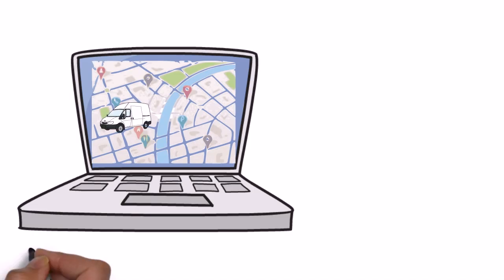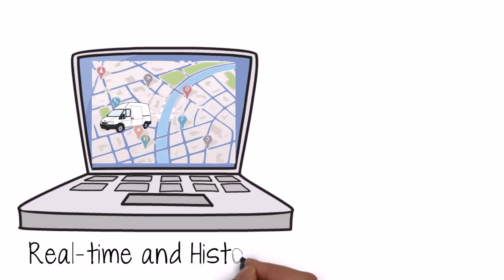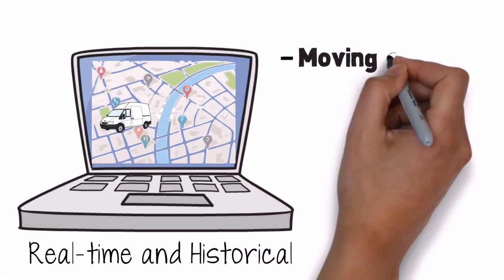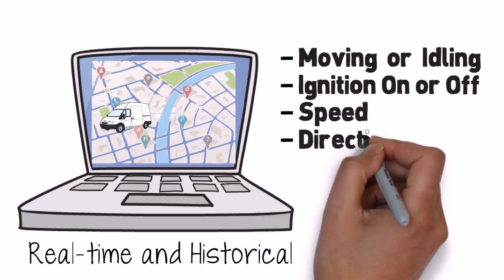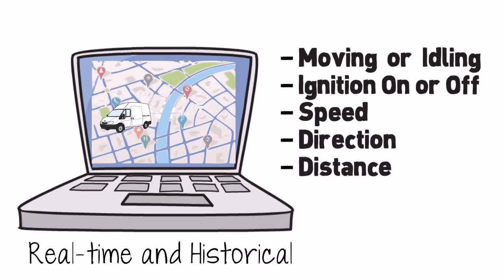Tom was delighted to find that he had live, web-based mapping, real-time tracking, as well as six-month history. On each of his vehicles, Tom could instantly be aware if they were moving or idle, whether the ignition was on or off, and the vehicle's speed, direction, and distance.